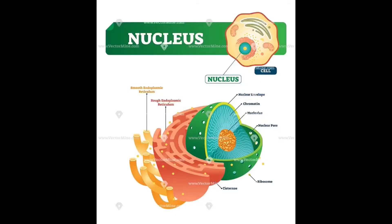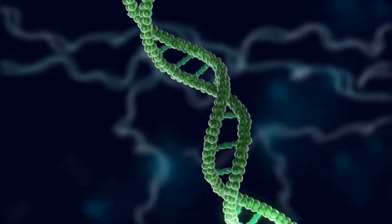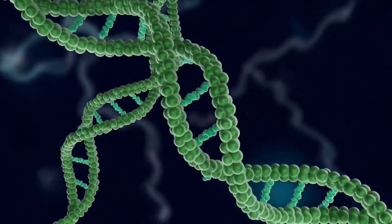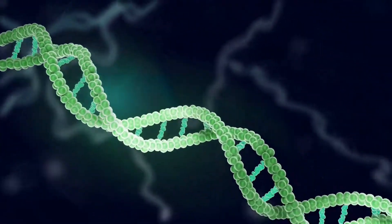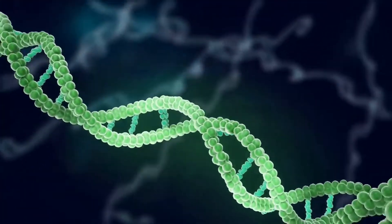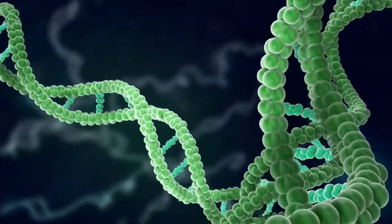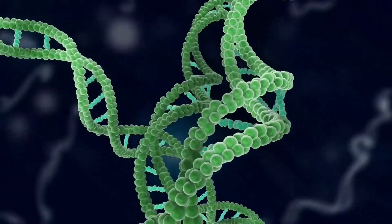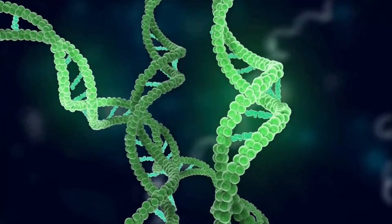Three major components of the nucleolus are recognized: the fibrillar center, the dense fibrillar component, and the granular component. Transcription of the rDNA occurs in the FC. The DFC contains the protein fibrillarin, which is important in rRNA processing. The GC contains the protein nucleophosmin, which is also involved in ribosome biogenesis.